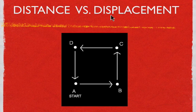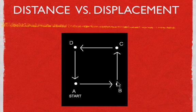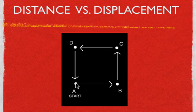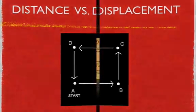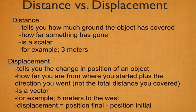Now what's the displacement? The definition for displacement is our change in position from where we started to where we ended. We started here, went to B, went to C, went to D, and back down to A. I'm not going to give you the answer yet because that's the punchline for the whole video — let's go through distance and displacement and come back to that.